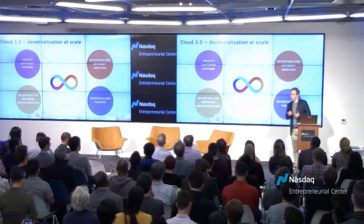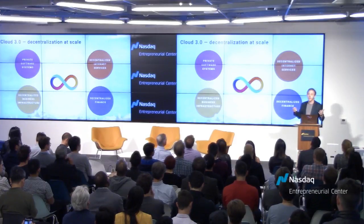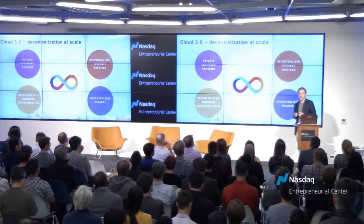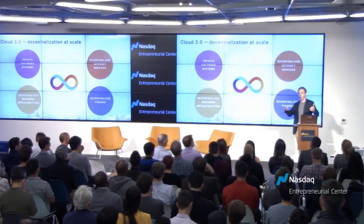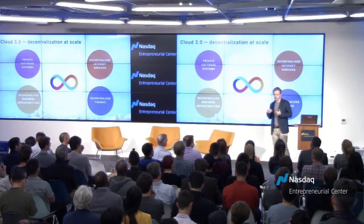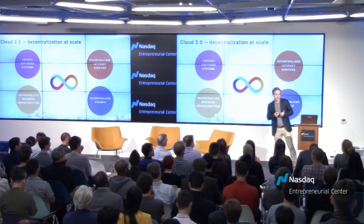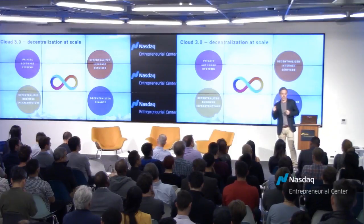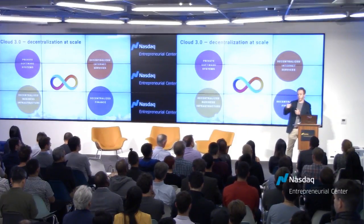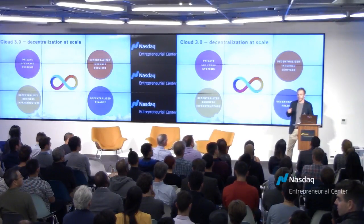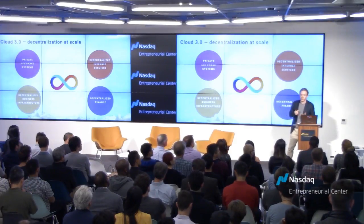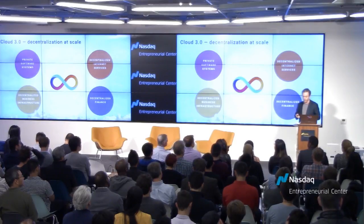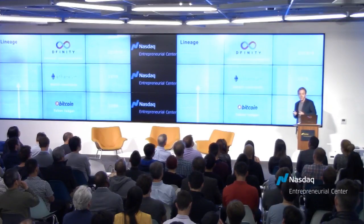There are four main areas where we think DFINITY has application. First, private software systems — people can build better business systems that are more reliable, more secure, and cost less to develop. Second, decentralized business infrastructures like supply chain platforms shared by entire industries, liberating capital through invoice discounting. Third, decentralized internet services reinvented as open-source businesses using autonomous tokenized software. And finally, decentralized finance, though that will likely be further down the line.